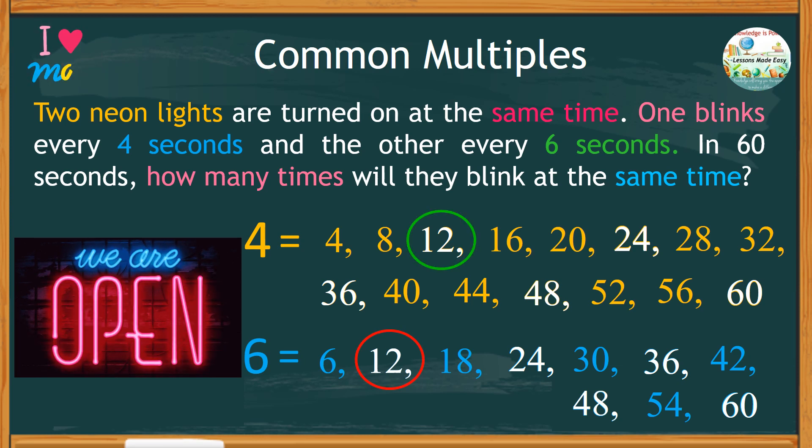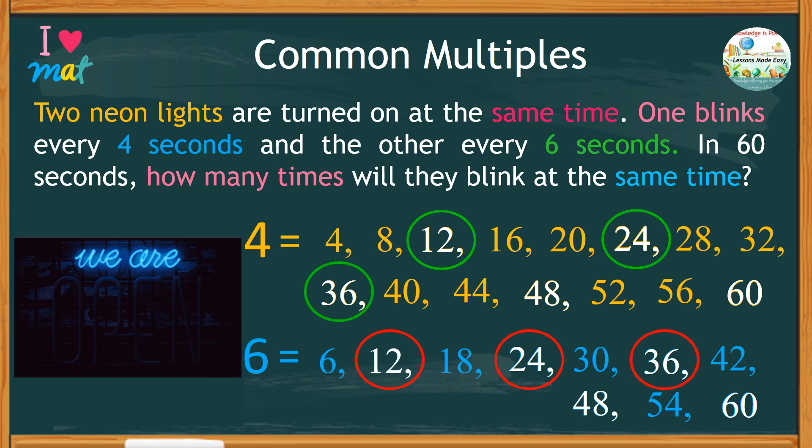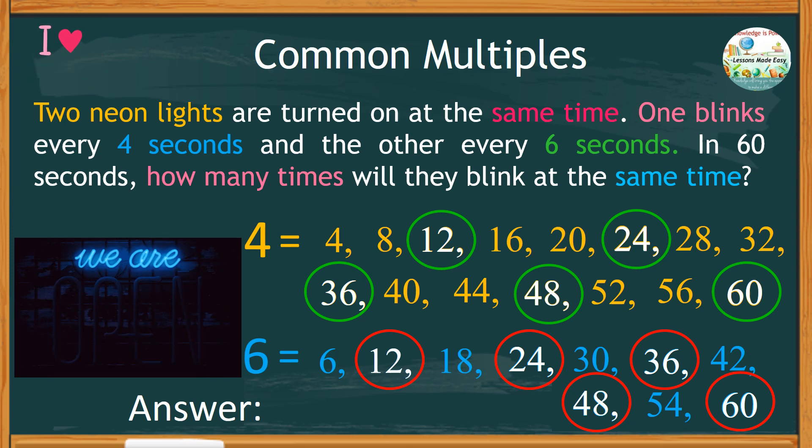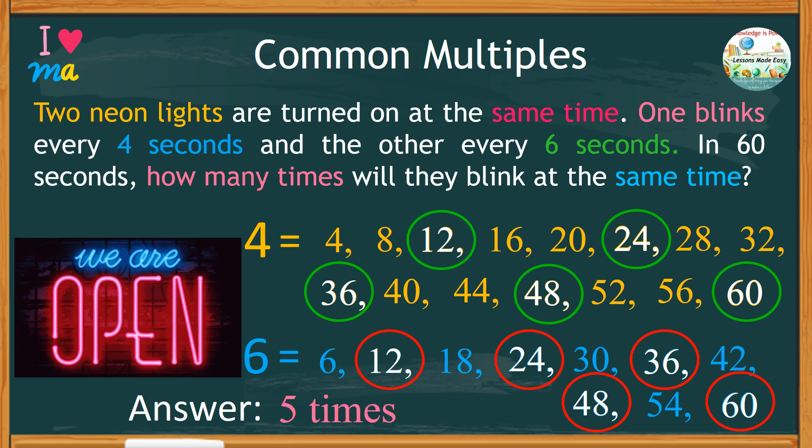We have 1, 2, 3, 4, and 5. So, to answer the question as to how many times the two lights blink at the same time, the answer is 5 times.